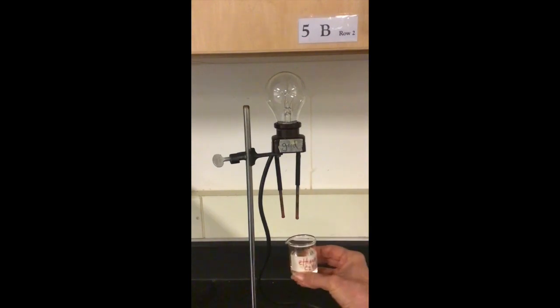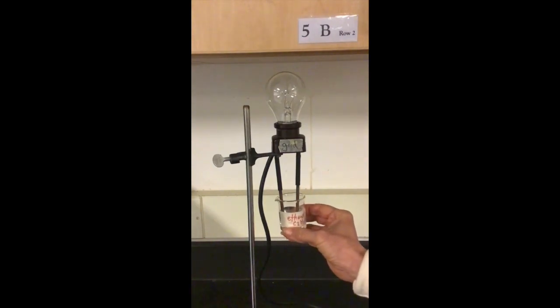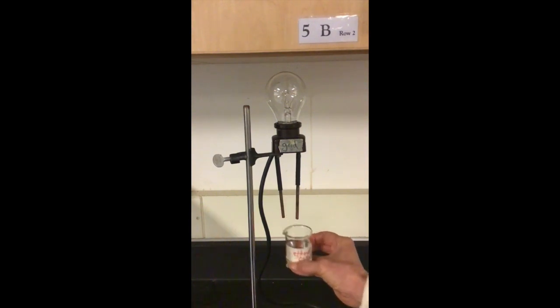The last solution is ethanol, which is drinking alcohol. You're recording in your notebook with these solutions whether they conduct electricity or not, based on how much the light bulb lights up, and whether they are non-electrolytes, weak or strong electrolytes.